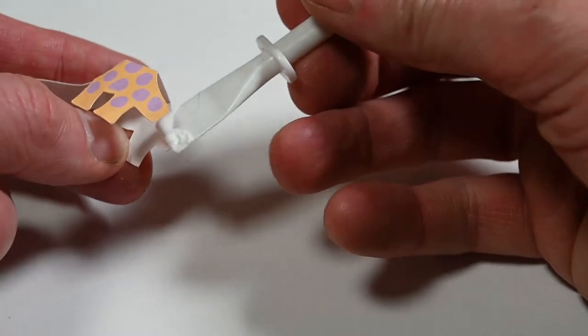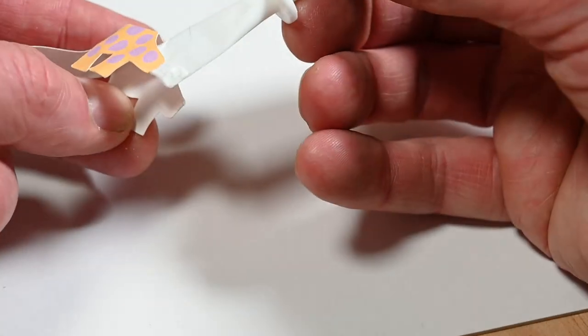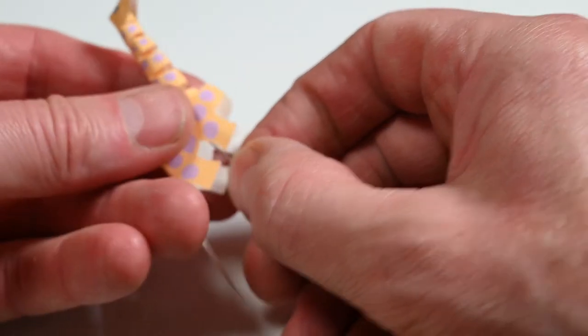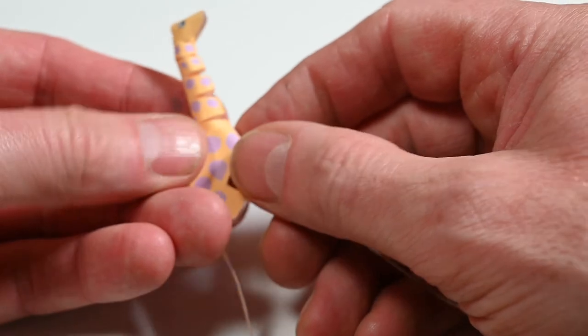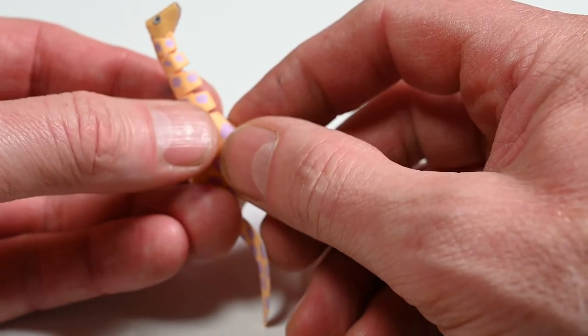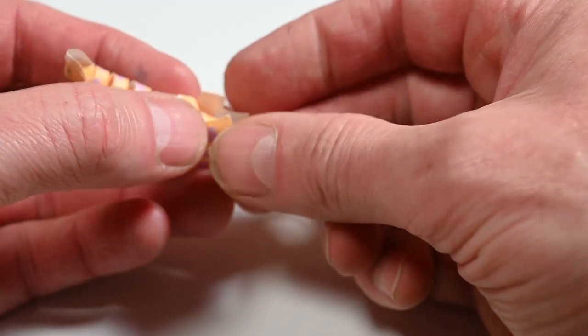So a little bit of glue on these inside tabs. That neck's going to go there. That curves round to try and make sure that the head's still pointing towards the front.